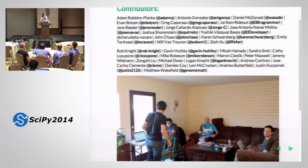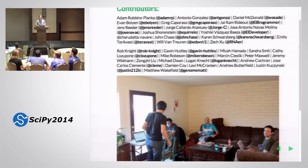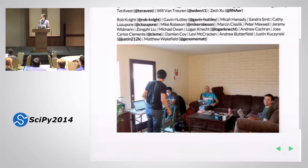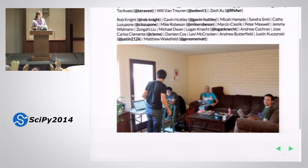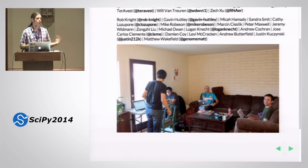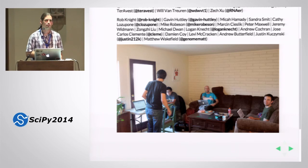I want to wrap up by acknowledging some of the contributors. Up at the top are folks who have contributed to scikit-bio itself. The second block includes folks who contributed to the prehistory of scikit-bio — some of the other packages I mentioned at the beginning. This is a photo from one of our first scikit-bio code sprints in Flagstaff, Arizona, and a couple of these folks are here in the room with us. If you have any questions, come find us this week — we're really interested in wider community involvement. I'll leave you with some of our awesome ASCII art and take any questions.